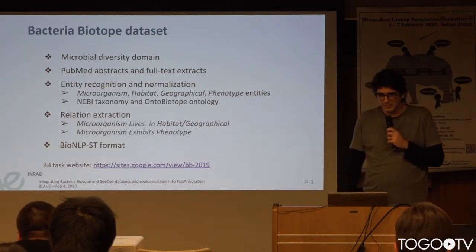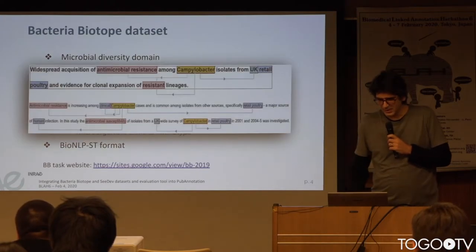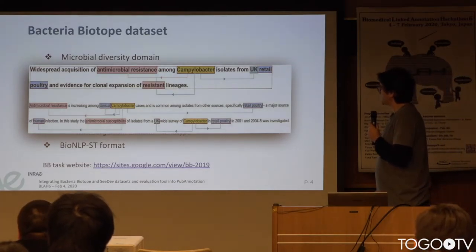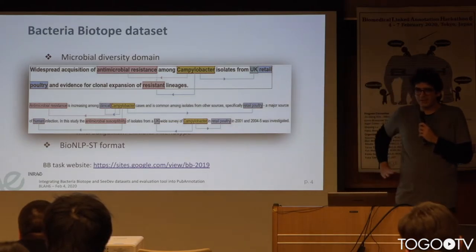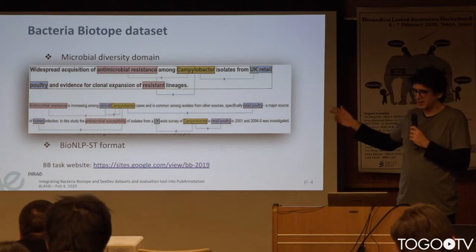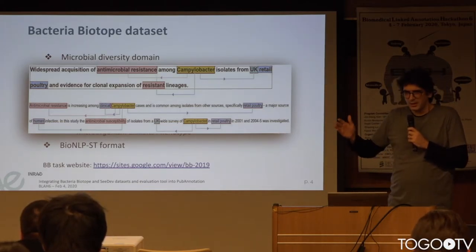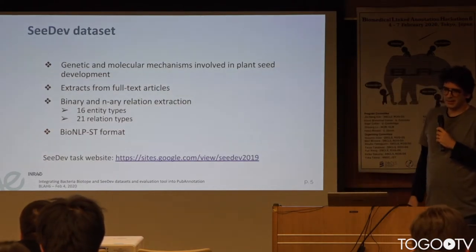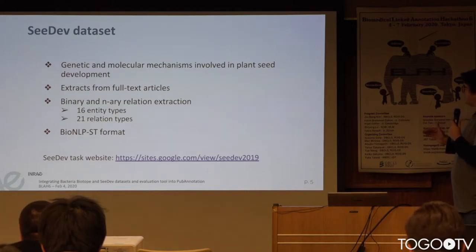We have two types of relations between microorganisms and habitats and phenotypes. This is what the annotation looks like. Microorganisms and geographical entities are rigid designators, whereas habitats and phenotypes are more like noun phrases. The CDF dataset concerns genetic and molecular mechanisms — specifically mechanisms for plant seed development.